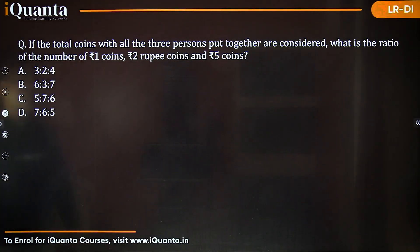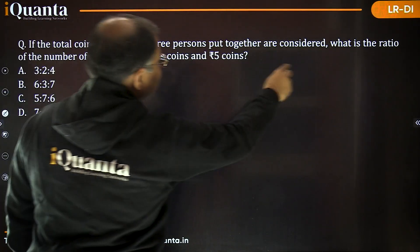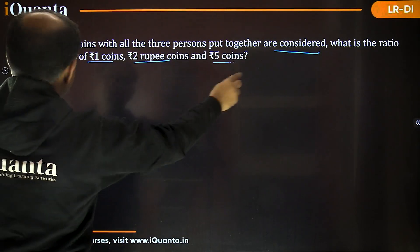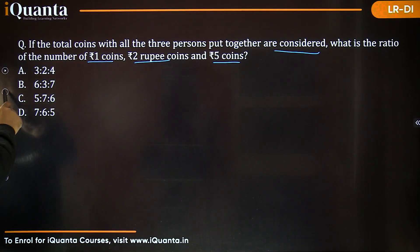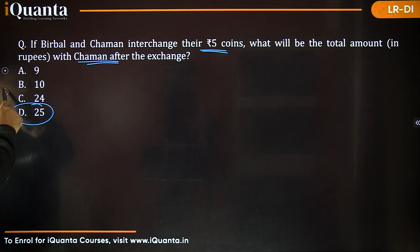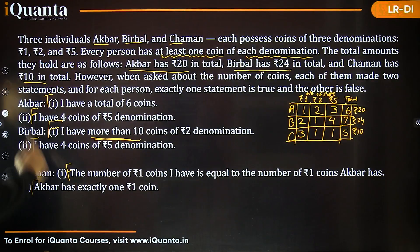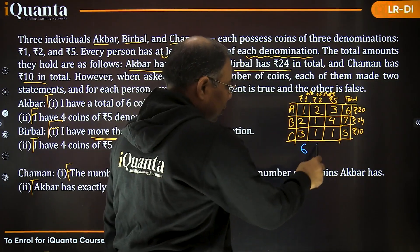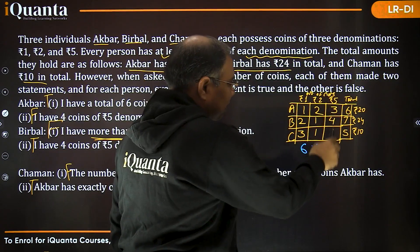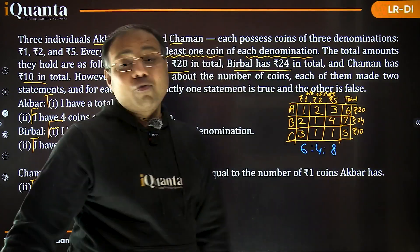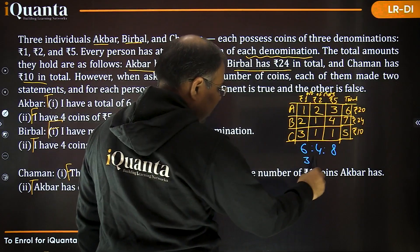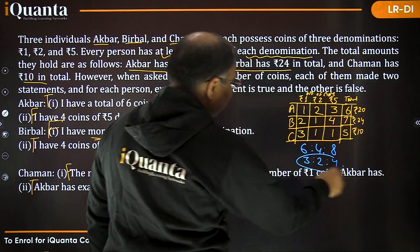Question 5: If the total coins with all three persons are considered together, what is the ratio of the number of ₹1 coins to ₹2 coins to ₹5 coins? Total ₹1 coins: 1+2+3=6. Total ₹2 coins: 2+1+1=4. Total ₹5 coins: 3+4+1=8. Simplifying by dividing by 2: ratio is 3:2:4.